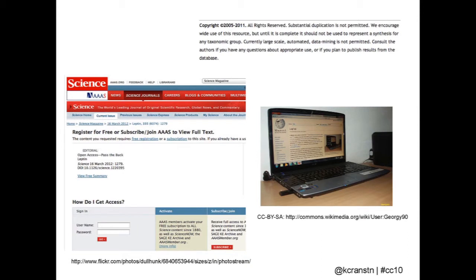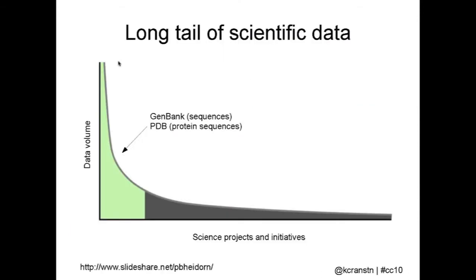There are some kinds of data that are widely shared — sequence data in GenBank, protein structure data — it's the community norm to share that data, there are repositories. What we're interested in is this long tail of other types of scientific data that people aren't sharing right now.